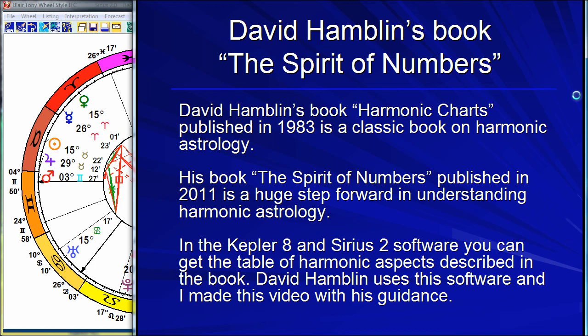Hello, today I'm going to tell you about the book The Spirit of Numbers by British astrologer David Hamblin. This is a great book. David Hamblin came out with a book called Harmonic Charts back in 1983. That book has become a classic book on harmonic astrology — very popular, people love it. And now, much later, in the year 2011, he's come out with another book called The Spirit of Numbers. This is a big step forward in understanding harmonic astrology after his decades of work.